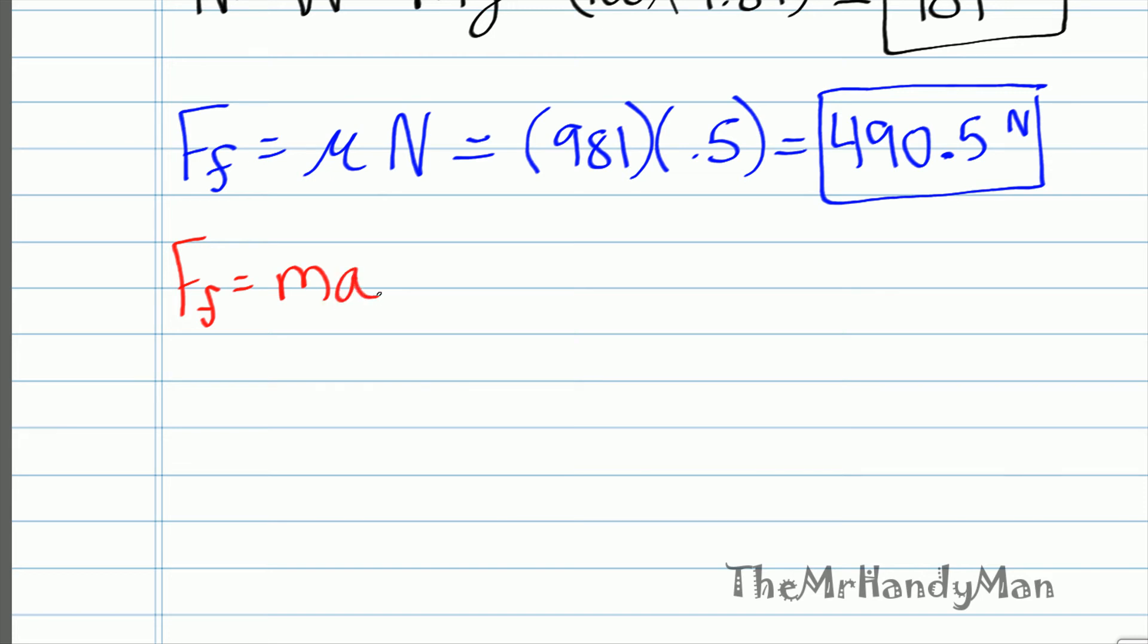Friction force equals ma. And some people ask, well why are you doing friction force equals ma? And it's because we're trying to find what will influence the motion of the box. So, what we have here is a force of 490.5 newtons is going to affect the mass of 100 kilograms times a, the acceleration. When we divide that over, we find that acceleration is equal to 4.905 meters a second squared.